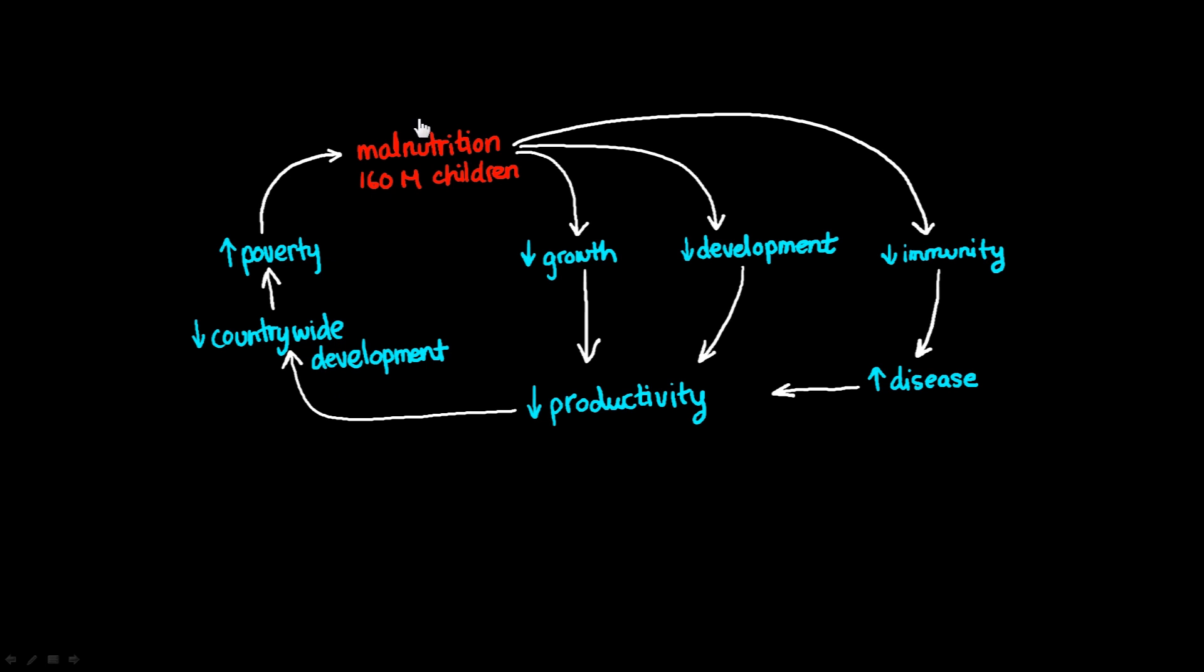And so you can see that this is a self-perpetuating cycle. We have malnutrition in many children around the world, leading to delayed growth or stunted, restricted growth and restricted development. Decreases in the child's ability to battle disease, leading to increased illness. All of these things contributing to decreased productivity of the child, and that is going to lead to decreased productivity of the country, widespread poverty, and again, malnutrition.